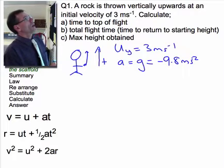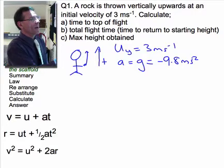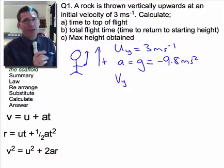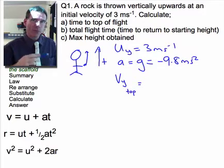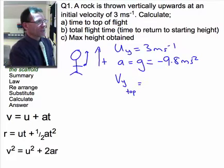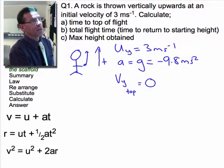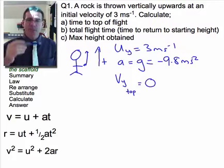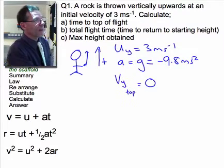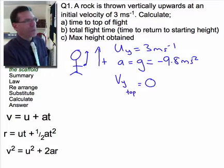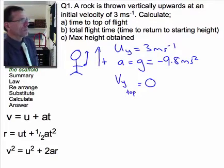Anything else that we can work out from this question? Well, if you think about it, the velocity at the top of flight, the final velocity, if we think about from when the rock is thrown at the very top of flight, that's gonna be zero because an object goes up, it's accelerating downwards, and there's a moment in time where it's zero at the top of flight. And we're gonna use that in order to work out exactly when we get to the top of flight.